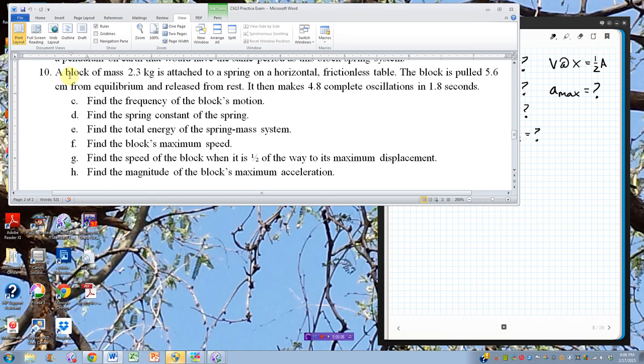Chapter 13, practice test number 10. We have a block of mass 2.3 kilograms attached to a spring on a horizontal frictionless table. The block is pulled 5.6 centimeters from equilibrium and released from rest. It then makes 4.8 complete oscillations in 1.8 seconds.